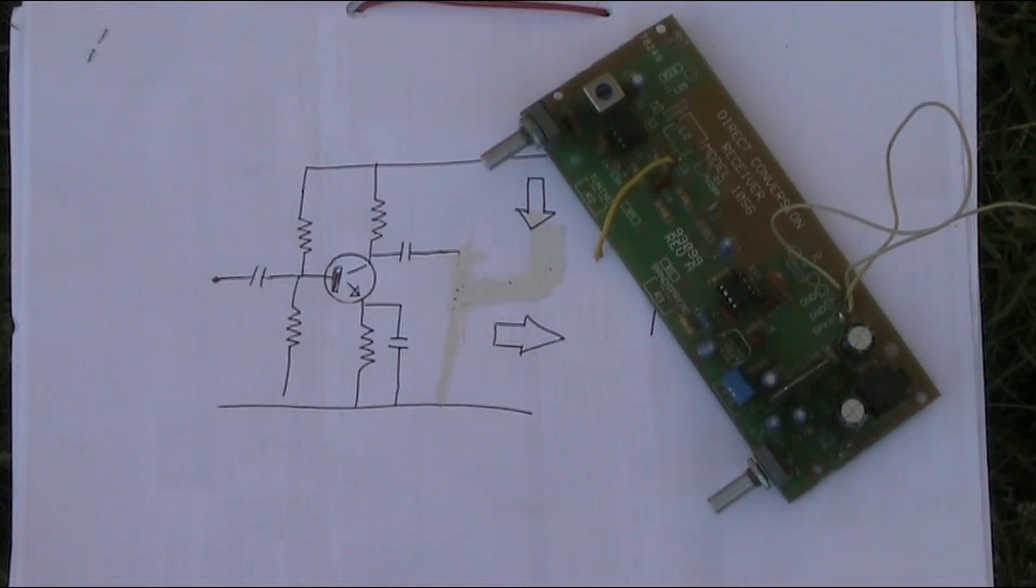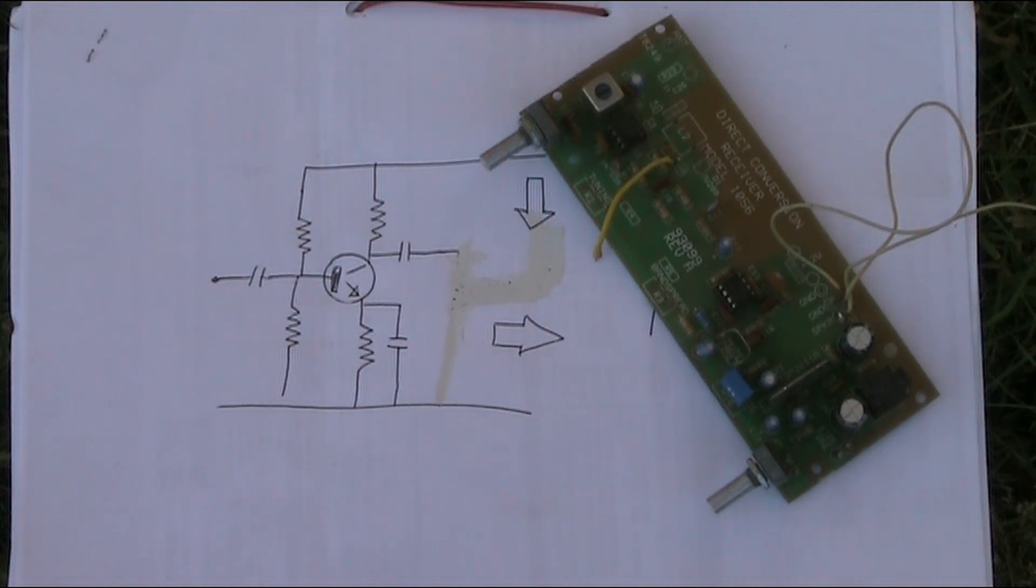Resistors are not polarized components. You can connect them either way and they'll still work. However, I think when you're building a kit on a printed circuit board or even on matrix board, you should pay some attention to how you install resistors. That's because it could make troubleshooting easier.